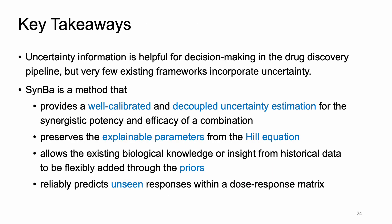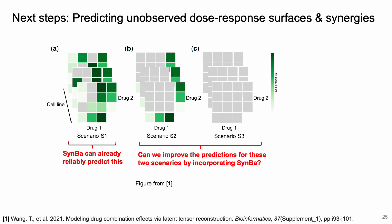In summary, SIMBA provides a well-calibrated and decoupled uncertainty estimation for the synergistic potency and efficacy of a combination. The explainable parameters from the Hill equation are preserved. The flexible priors allow a route to conveniently add existing biological knowledge or insight from historical data. SIMBA can also reliably predict unseen responses within a dose-response matrix. The next step would be to incorporate SIMBA in prediction models to investigate whether prediction of unobserved dose-response surfaces and synergies can be improved by the additional information from having uncertainty estimation for the parameters.